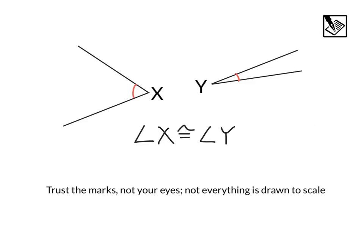I will leave you with this word of wisdom. Trust the marks, not your eyes. In math, not everything is drawn to scale. We can see that these two angles do not look congruent at all. However, they both have one arc, so we can conclude that angle X is congruent to angle Y. Just like if things look congruent, you don't know unless we have information proving that. So again, trust the marks, not your eyes. Hope this video has been helpful.